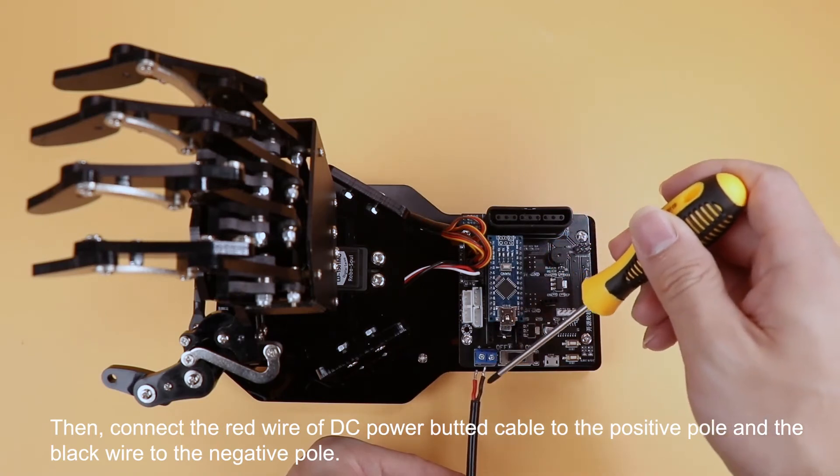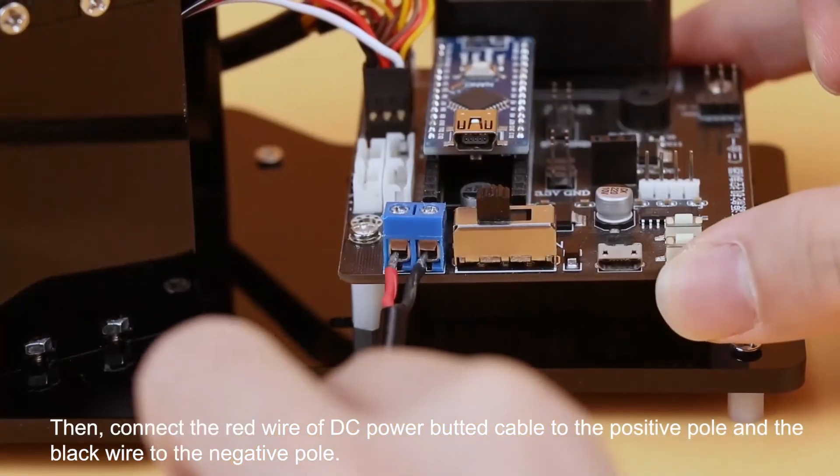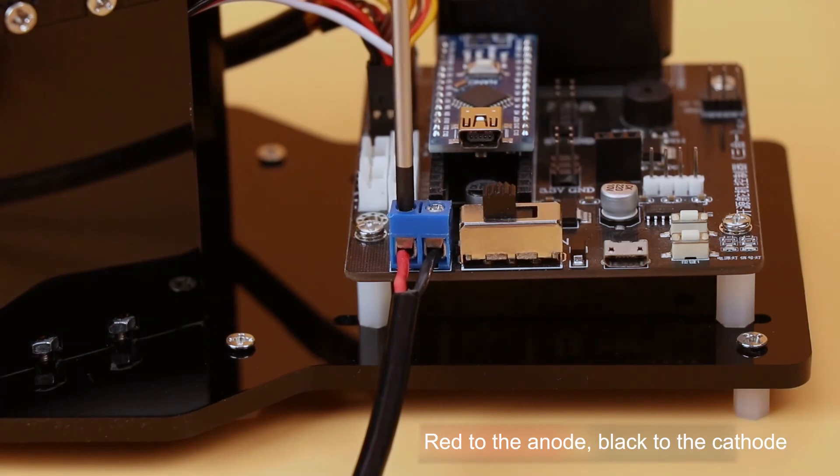Then connect the red wire of DC power button cable to the positive pole, and the black wire to the negative pole.